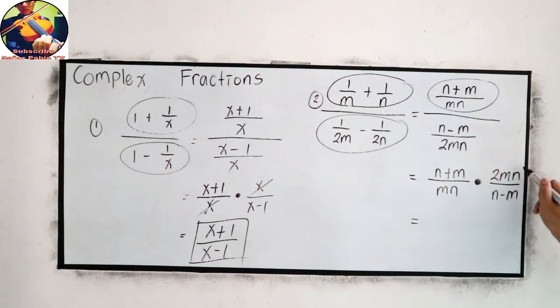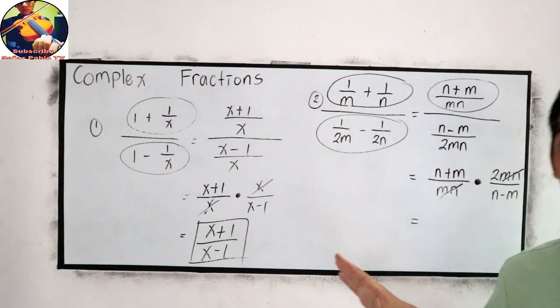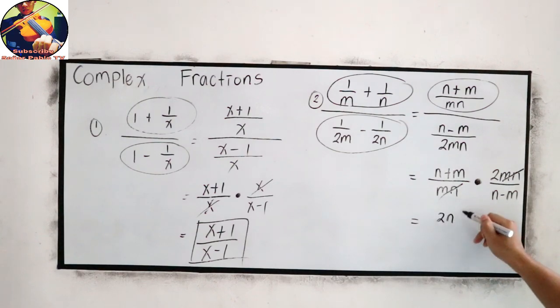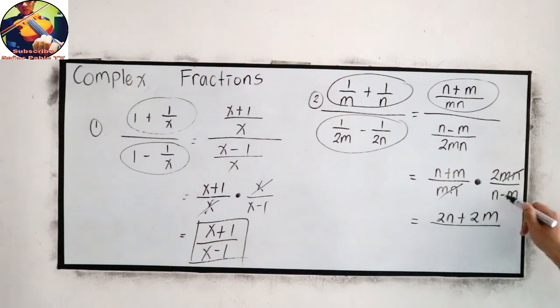We can cancel mn. How about n plus m over n minus m? We cannot cancel them because they are different. So our final answer is 2 times n, 2n plus 2 times m, 2m, over n minus m. This will be our simplest form.